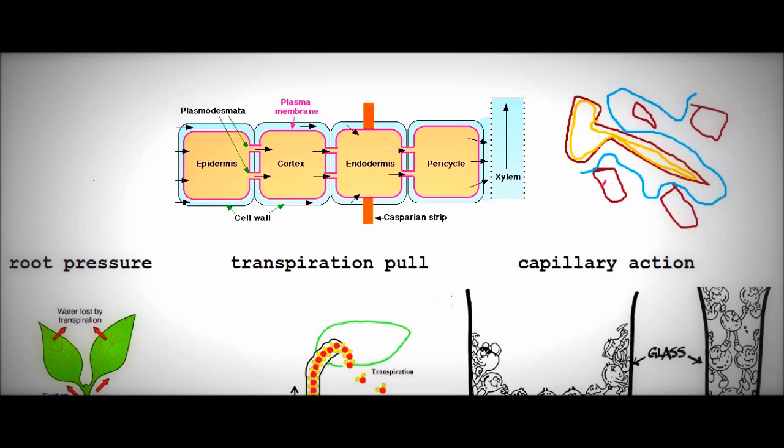So basically the minerals go in via active transport and make the root hair cell have a lower water potential. As we learned from previous videos the water potential outside might be 0 and it might be minus 500 inside and so water will move in this direction because it's moving down a water potential gradient via osmosis into the root hair cell.